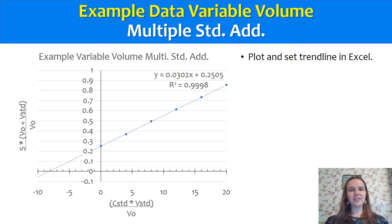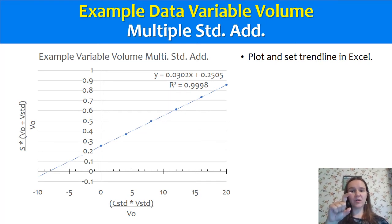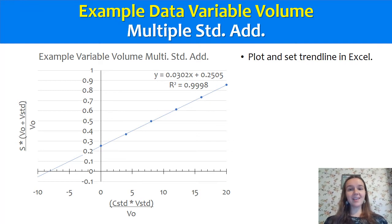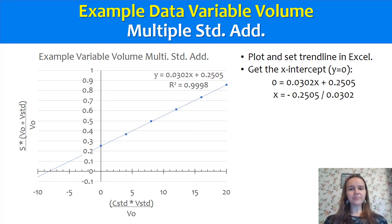Once you've put that into a spreadsheet program like Microsoft Excel, you can make this plot. The x-axis is C_standard × V_standard / V_0, and the y-axis is signal × (V_0 + V_standard) / V_0. You're going to get a positive linearly increasing line where the intercept — your original sample with no standard added — has a real positive reading, meaning you have some analyte in that sample. You've essentially built a calibration curve in your sample. We can extrapolate back to the x-intercept (where y = 0) to find the concentration of your analyte. Setting y = 0 in the trend line equation, rearranging, and solving for x gives a negative value — in this case, −8.29.